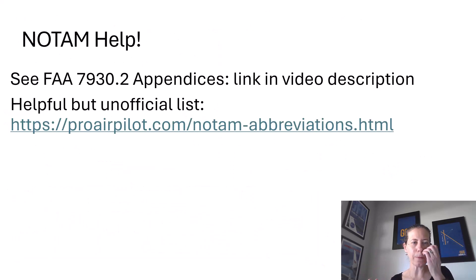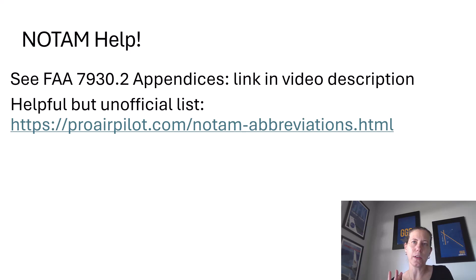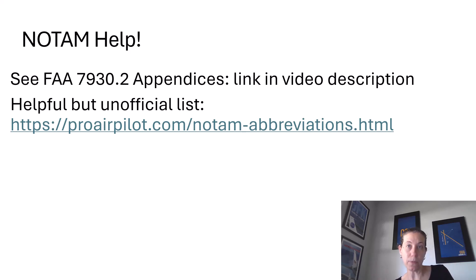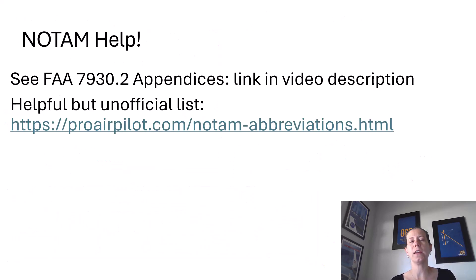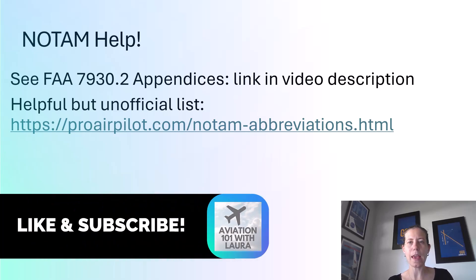The document I used for some help was FAA publication 7930.2 — the appendices have various examples of NOTAMs. I'll put a link in the video description. I also found some unofficial lists on the internet somewhat helpful, but even those did not have the NRA abbreviation — they did have the ACE one. I'd love to know what you guys think and what else you've seen on NOTAMs affecting minimums. Thank you for watching Aviation 101 with Laura, and I hope you have a great day.